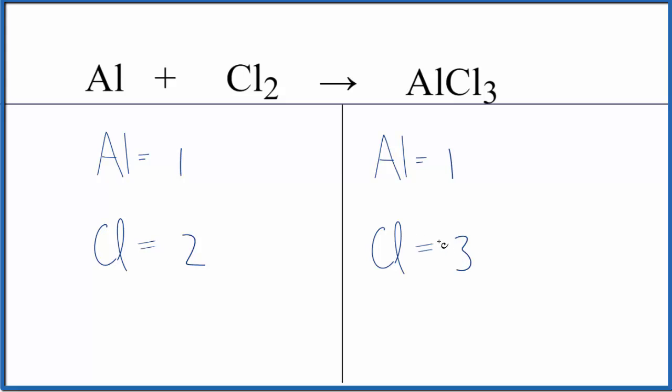It's probably best to get this number here to an even number. That should make it easy to balance. So if we put a coefficient of two in front of the AlCl3, two goes to everything. So one times two, that gives us two aluminums. Three times two, that'll give us six chlorine atoms.